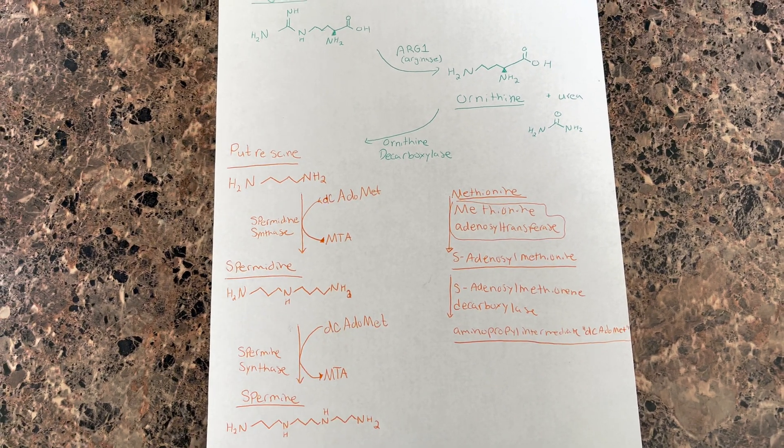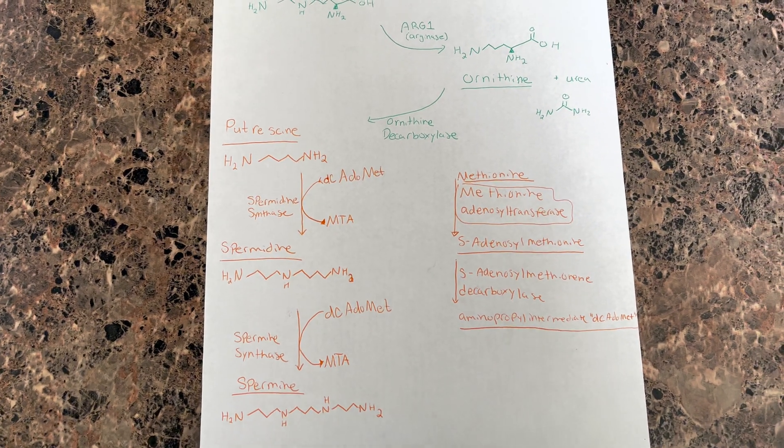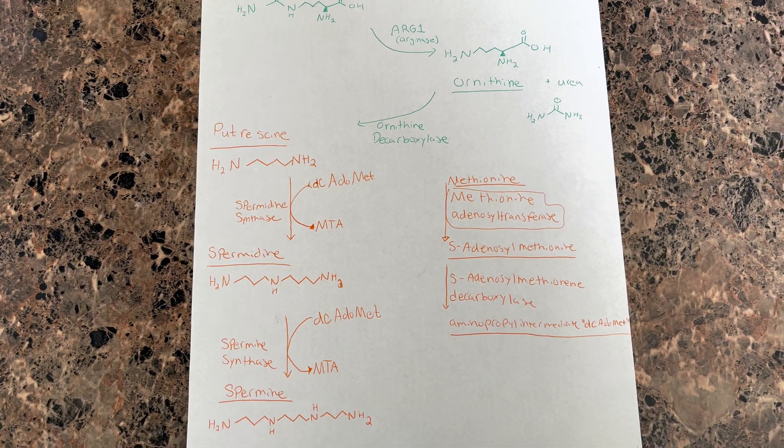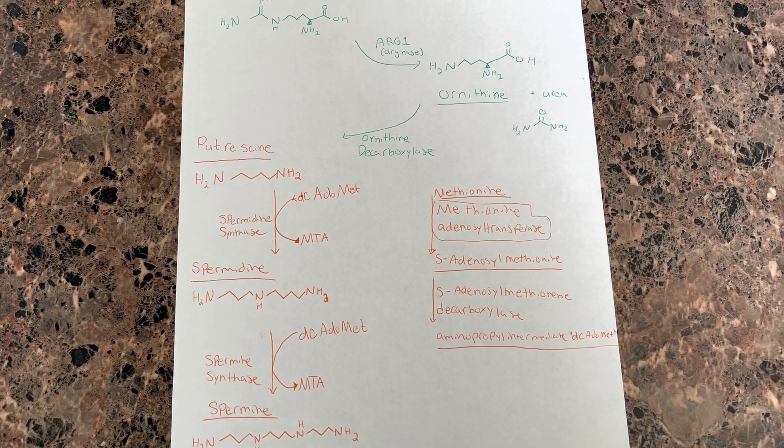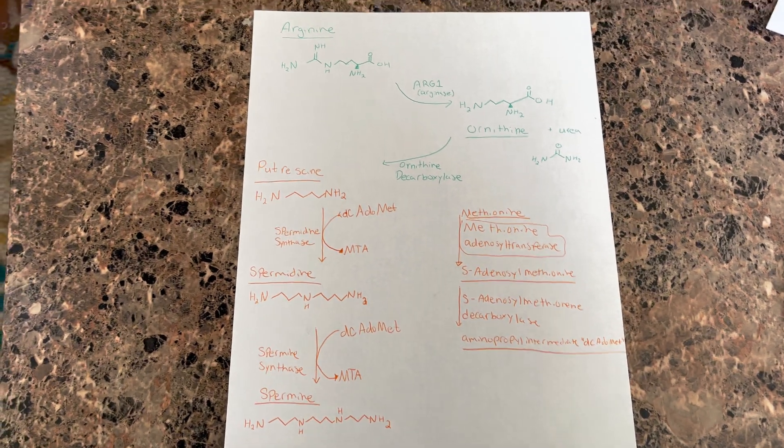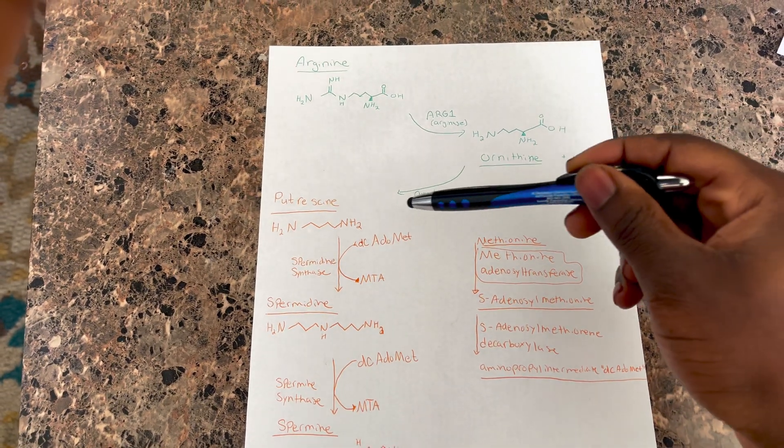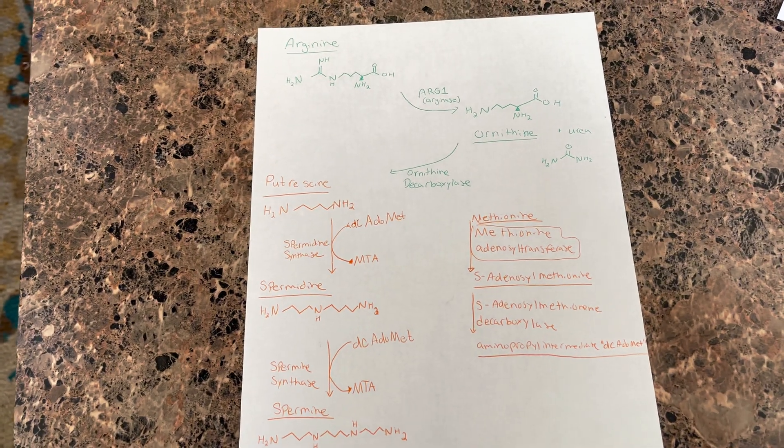Before we get into the catabolic processes, I'm going to go over the basic pathway for synthesis of these polyamines. The three natural polyamines are putrescine, spermidine, and spermine.